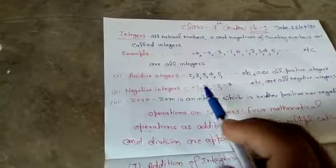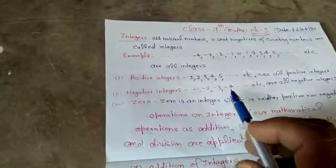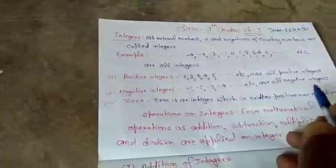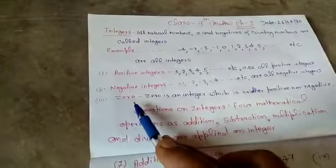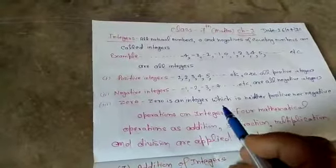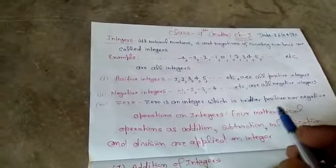Negative integers. Minus 1, minus 2, minus 3, minus 4 etc are called negative integers. Third, 0. Zero is an integer which is neither positive nor negative.